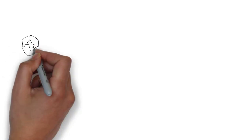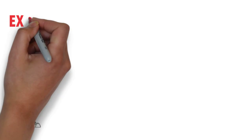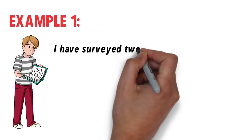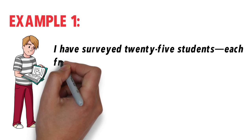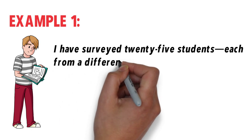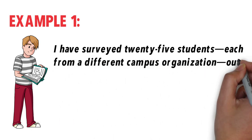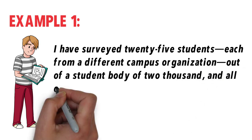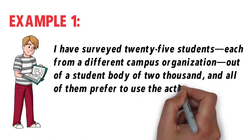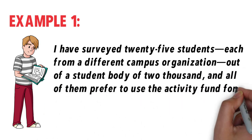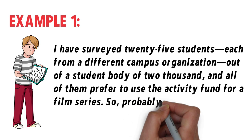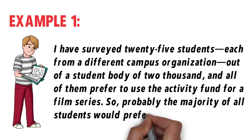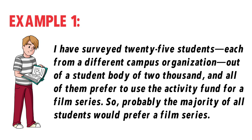Let us consider these following examples. I have surveyed 25 students, each from a different campus organization, out of a student body of 2,000, and all of them prefer to use the activity fund for a film series. So, probably, the majority of all students would prefer a film series.